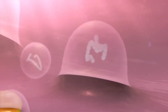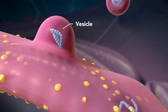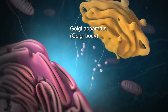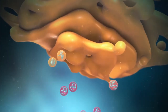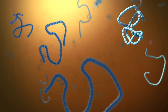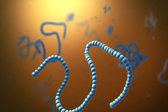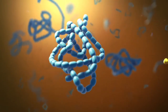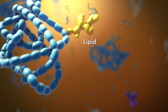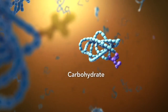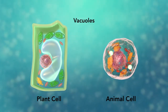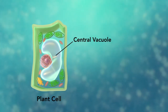Proteins and other materials emerge from the endoplasmic reticulum in small vesicles, where the Golgi apparatus — sometimes called the Golgi body — receives them. As proteins move through the Golgi body, they're customized into forms that the cell can use. The Golgi body does this by folding the proteins into usable shapes or adding other materials onto them, such as lipids or carbohydrates.